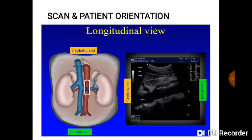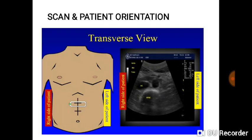Diagrammatically, the top of the screen is the skin and the bottom is the deeper structure being scanned. For longitudinal scans, left of the screen is the patient's cranial part and right is the caudal part. For transverse scans, skin is above and deeper structures below, with the left of the screen corresponding to the patient's right and the right of the screen to the patient's left. This is demonstrated with the aorta: the probe marker pointing up is visible, with the left side being cephalic and the right being caudal.